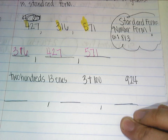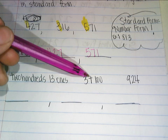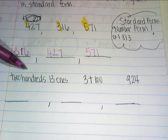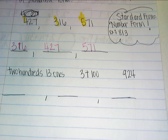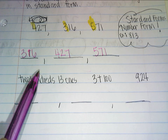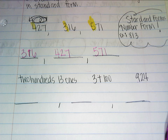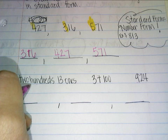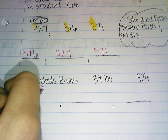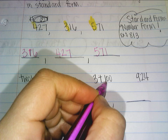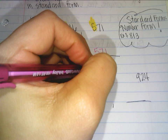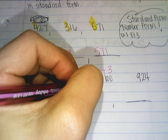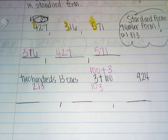Now let's go to this next one. Since I have different forms of numbers — here I have unit form, and here I have expanded form — you want to rewrite it to help you. I'm going to rewrite the number in standard form. I have 200s and 13 ones, which makes it 213. Then I have 3 plus 100 — this is a little tricky because it's out of order, so I rewrite it in the correct order and I can clearly see it's 103. And then here is my 924 in standard form.